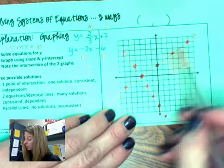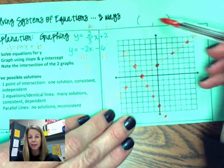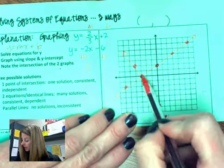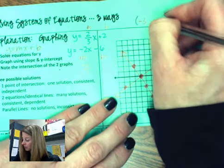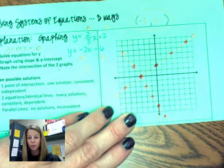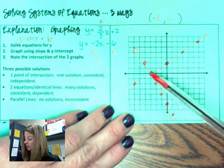So my intersection point is right here. The solution is going to be that ordered pair. This dot is sitting at negative one, two, three, zero. So negative three, zero is my solution. It is the only point that's going to work for these two equations.